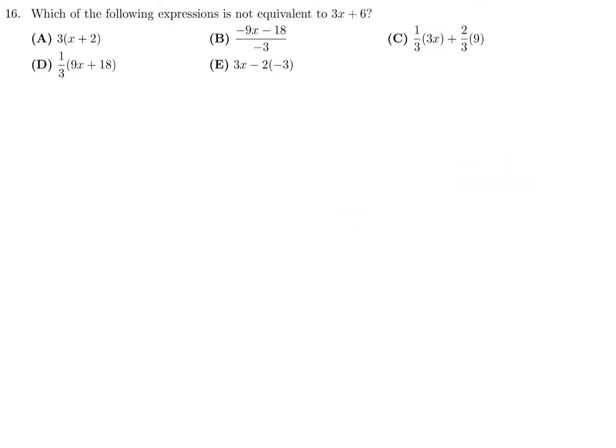Which of the following expressions is not equivalent to 3x plus 6? Let's do each one. This is 3x plus 6. This, if you divide through by negative 3, it looks like 3x plus 6. This one is x plus 6. This one is 3x plus 6 and so is this one. Therefore, number 16 is C.